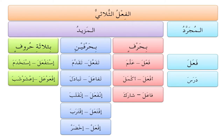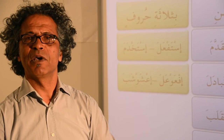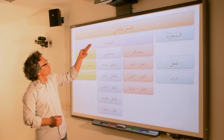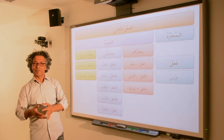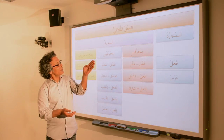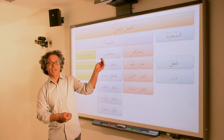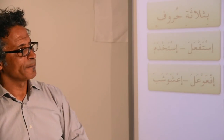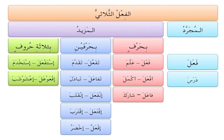الفعل الثلاثي can be مجرد — meaning the simple or stripped form of the verb, closest to the root — and that is فَعَلَ, like درسَ. And then there is المزيد, meaning the derived verb, consisting of more than فَعَلَ. These are of three categories: المزيد بحرف واحد — you add one letter; المزيد بحرفين — you add two letters; والمزيد بثلاثة حروف. For example, فَعَّلَ adds a shadda.